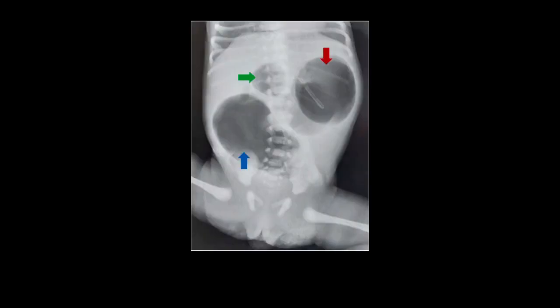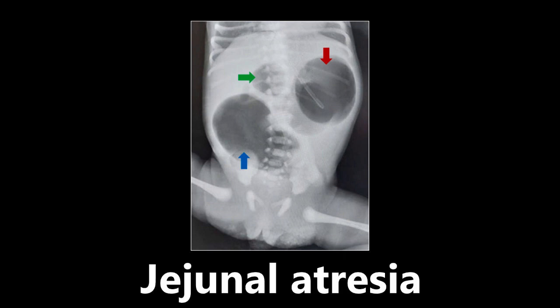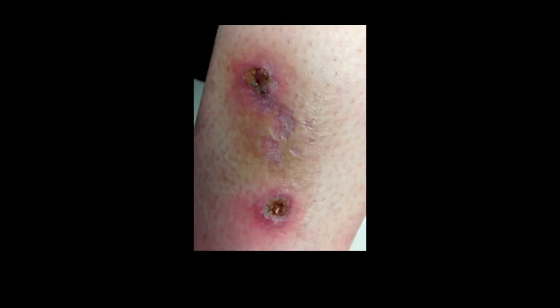Moving on, we have three arrow signs, which corresponds to a triple bubble sign — and that means jejunal atresia. We have the bubble signs from the stomach, from the duodenum, and from the jejunum. There's an atresia so things cannot pass, and we get a triple bubble sign, which is very unique.